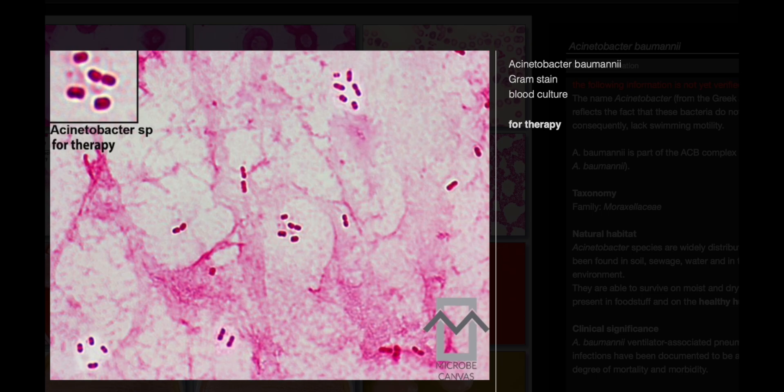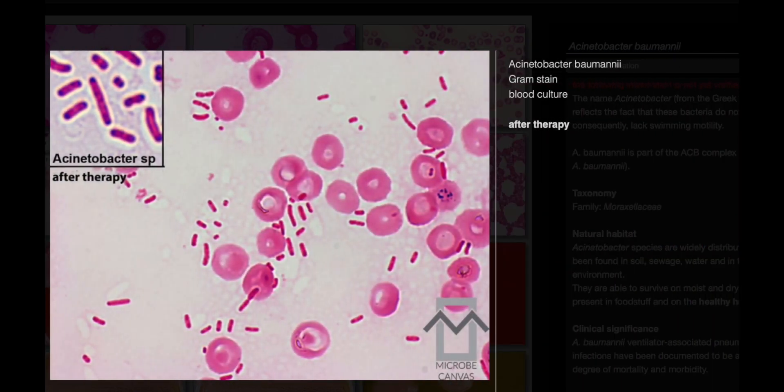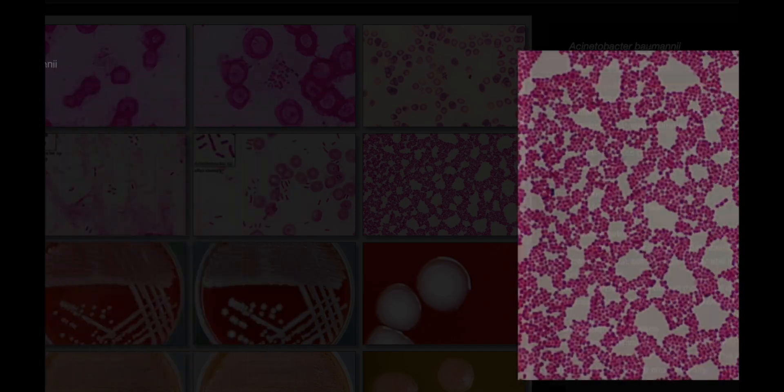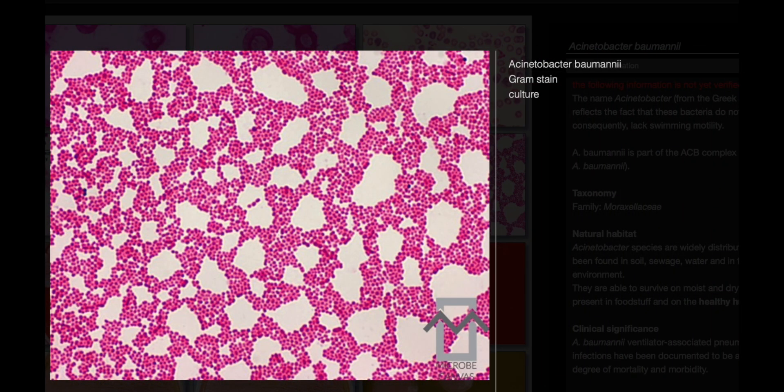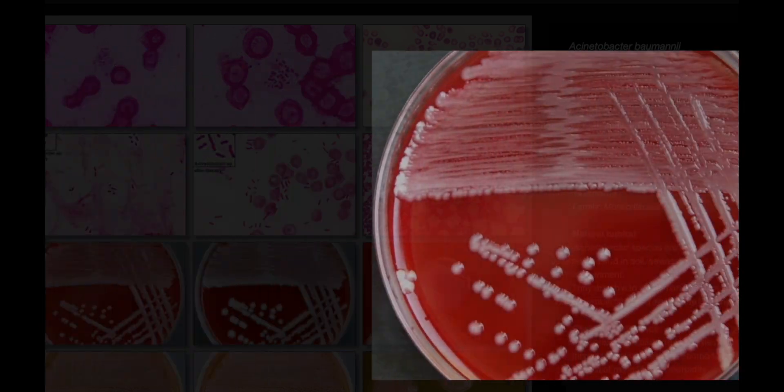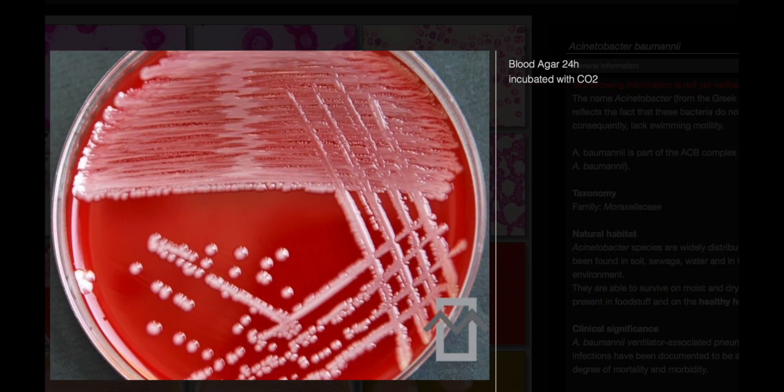Acinetobacter species are ubiquitous in nature, inhabiting soil, sewage, water, and even hospital environments. They demonstrate remarkable resilience, capable of surviving on both moist and dry surfaces. Moreover, they can be found in food and on the skin of healthy individuals.